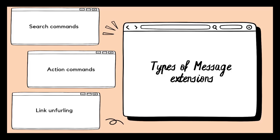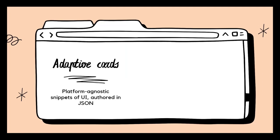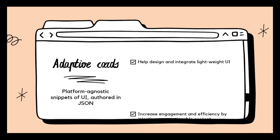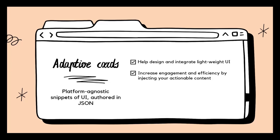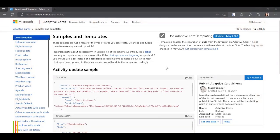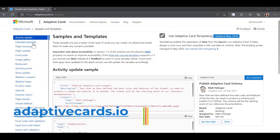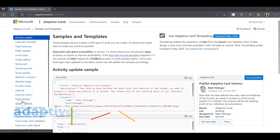Link unfurling gives out more information about a link than just a URL pasted in the chat, and you can customize this card as well. We talked about inserting rich, actionable cards in the conversation, and it only makes sense to talk further about adaptive cards, which are the actionable cards we will use in this lab. Adaptive cards are platform-agnostic snippets of UI authored in JSON that apps and services can openly exchange, helping design and integrate lightweight UI for all major platforms. If you want to find out more, go to adaptivecards.io for samples and documentation.